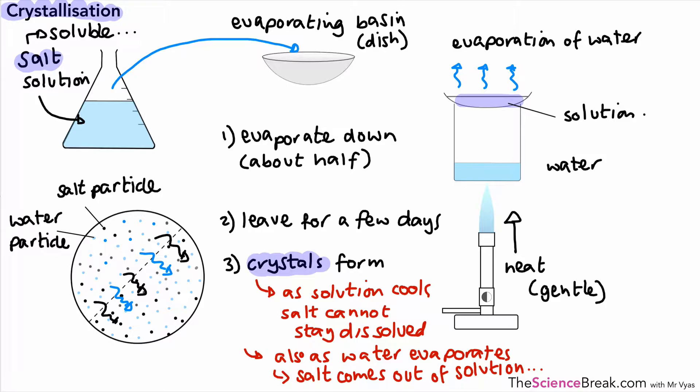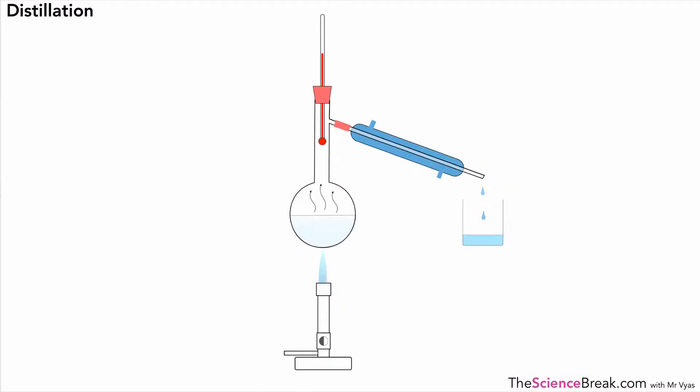The next and final method that I would like to look at is distillation. Here is some simple apparatus that shows distillation. When do we use distillation? This is when we want to recover the water. In the last example, the water just evaporated away. But if we want to recover the liquid, and in this case it's water, we can use distillation. We also use this sometimes when we want to separate out a mixture of different liquids. We're going to look at that in detail when we do fractional distillation.